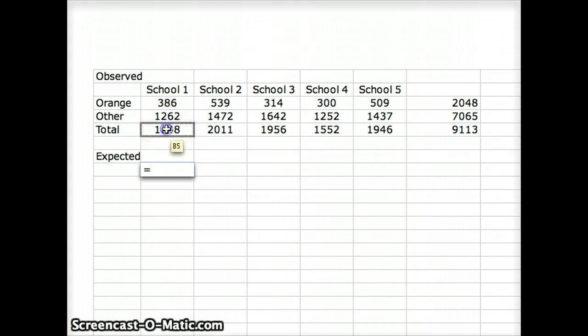It's going to equal 1,648 times this number, which I'm going to put in 2,048 to enable me to program it properly, divided by 9,113, the total number in our set, and we're going to let the column vary.